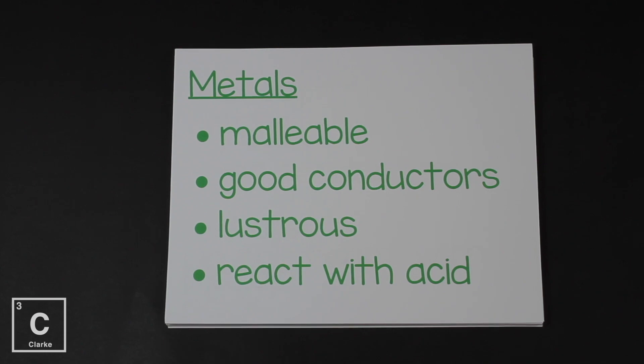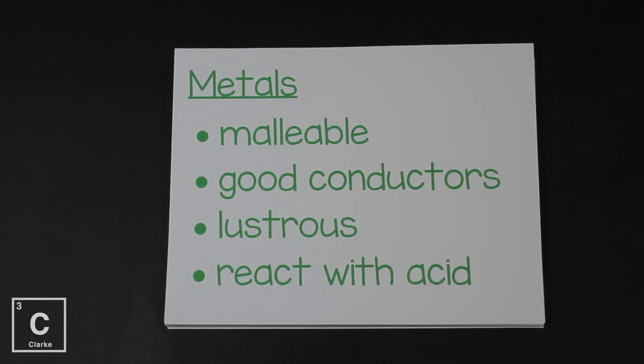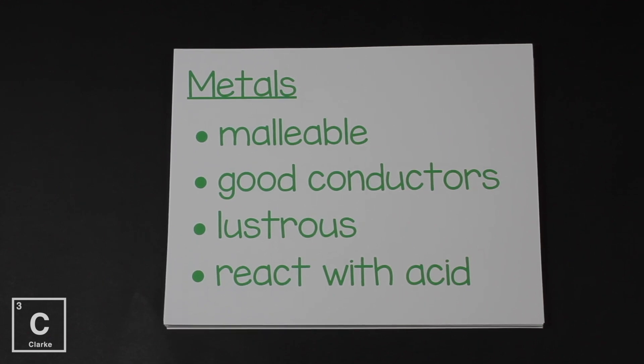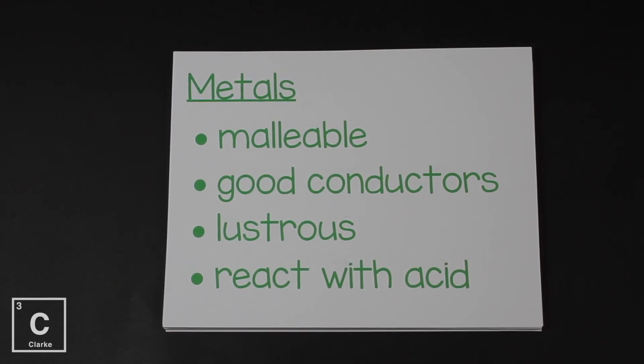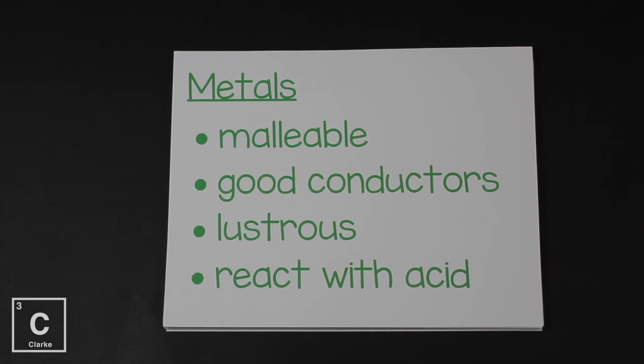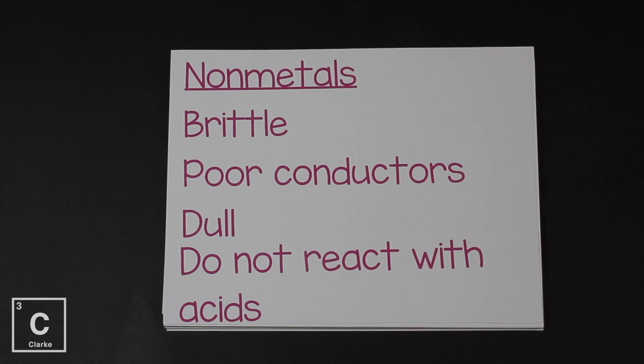Metals are malleable. Malleable means that you can change its shape. If you hit it with a hammer, it's just going to dent, not shatter. They're good conductors of heat and electricity. They're lustrous - that's a fancy word for shiny. And they also react with acids. I'm going to skip metalloids for right now. We're going to come back to that in just a minute, I promise.